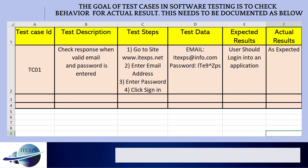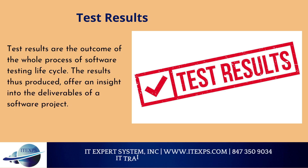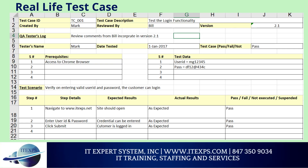Before we go further, let us understand what test results are. Test results are the outcome of the whole process of the software testing life cycle. The results thus produced offer an insight into the deliverables of a software project. The outcome for results will be pass or fail. Let us see test results as pass or fail for this example. This is how the real life project test case looks like.